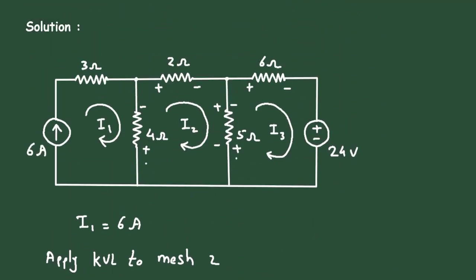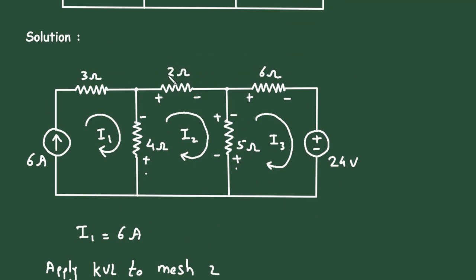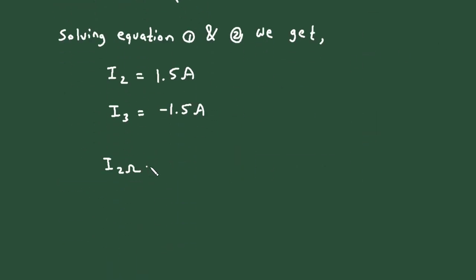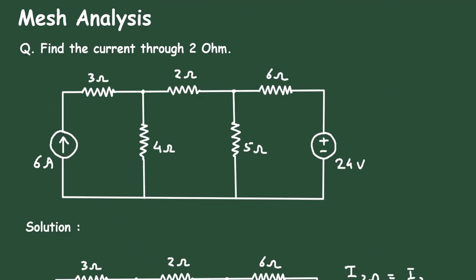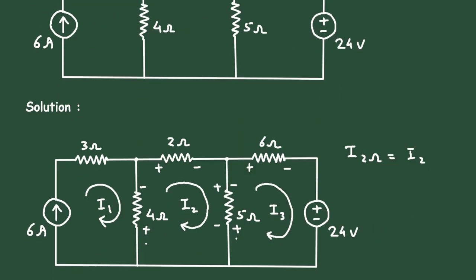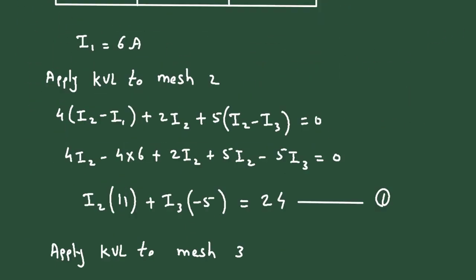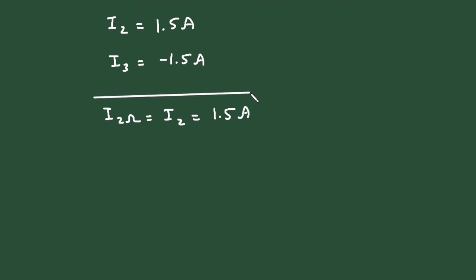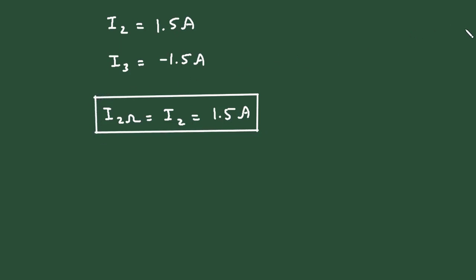Now here, we have to find the current through this 2 ohm resistance. The current through 2 ohm, I_2ohm, is equal to I2, which is equal to 1.5 ampere. So this is how we can find the value of current by using mesh analysis.